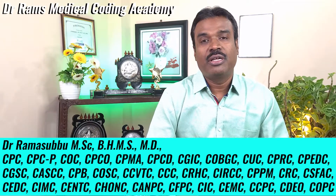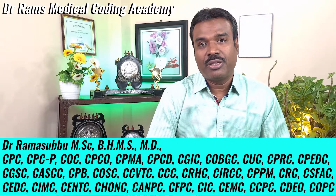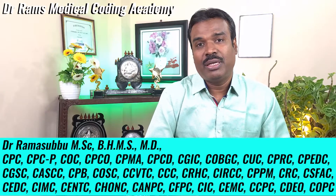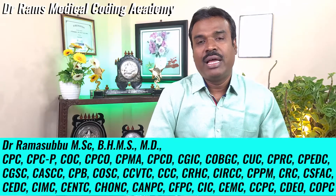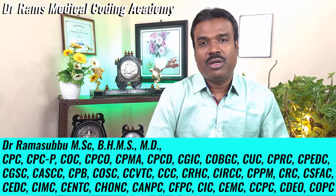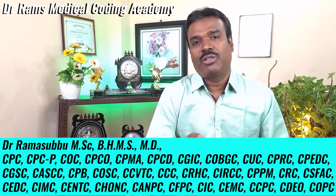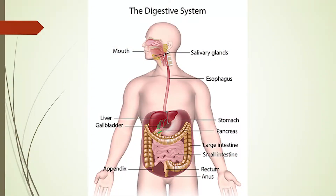Today we are going to discuss the GI system or the alimentary system. The word 'alimentary' refers to food. So the system involved with nourishment we call the alimentary system, and the alternative names are the digestive system or the GI system, which is the gastrointestinal system.